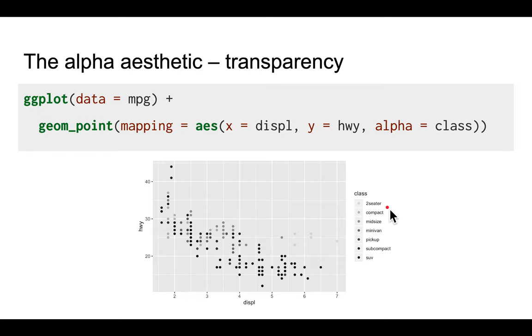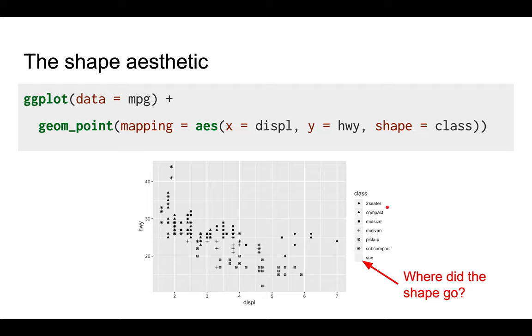You can also change the shapes of the points based on the values. If you look carefully at the legend, you'll notice that only six shapes are shown. So where did the shape for the SUVs go? That's pretty strange.